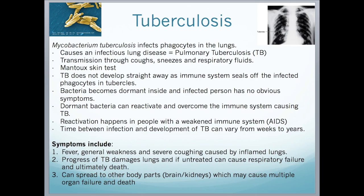The time between infection and development of TB can vary from weeks to years. Symptoms initially include fever, general weakness, and severe coughing caused by inflamed lungs. As TB progresses, it damages the lungs, and if left untreated can cause respiratory failure and ultimately death. TB can also spread to other body parts such as the brain or kidneys, which can cause multiple organ failure and ultimately death.